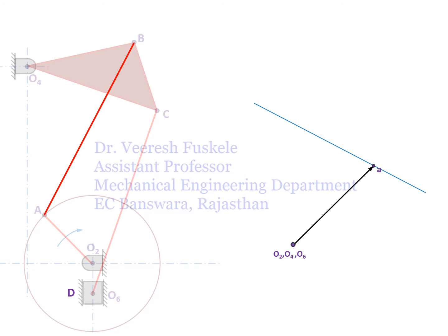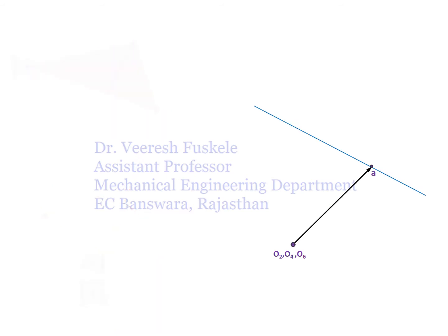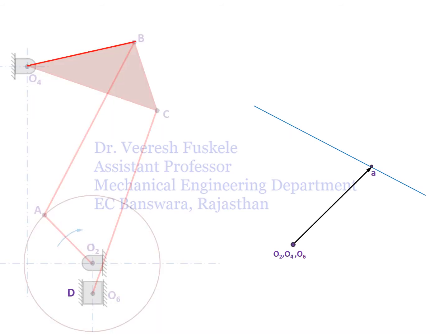To get point B, we draw the velocity vector of link O4B from point O4 in the velocity diagram. The velocity vector of O4B will be perpendicular to link O4B. By the intersection of the velocity vector of O4B and AB, we get point B in the velocity diagram, and we also get the velocities of links AB and O4B.